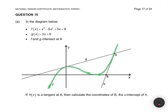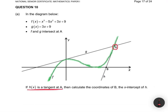In the diagram, f(x) = x³ - 5x² + 3x + 9 and g(x) = 3x + 9. f and g intersect at point A, as shown in the graph — f(x) is highlighted in green. The question says that if h(x) is the tangent at A, calculate the coordinates of B, the x-intercept of h. It will be easy to calculate B once we have the equation of h(x).